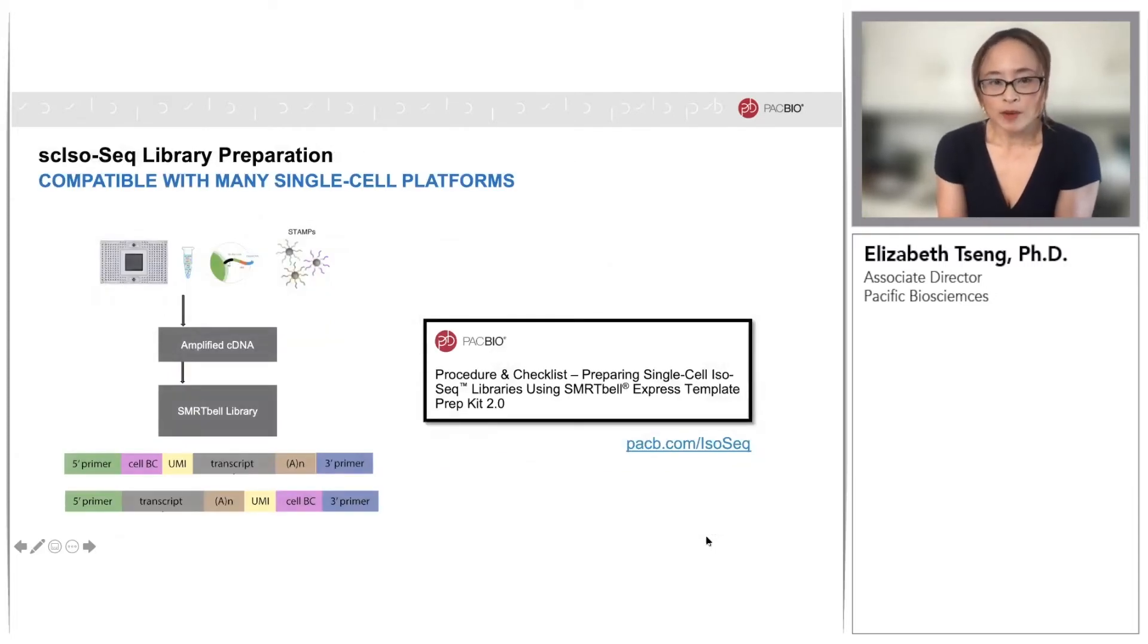Theoretically, any single-cell platform that generates full-length cDNA can be sequenced on the PacBio systems. The relative positions of the UMIs and barcodes do not matter.